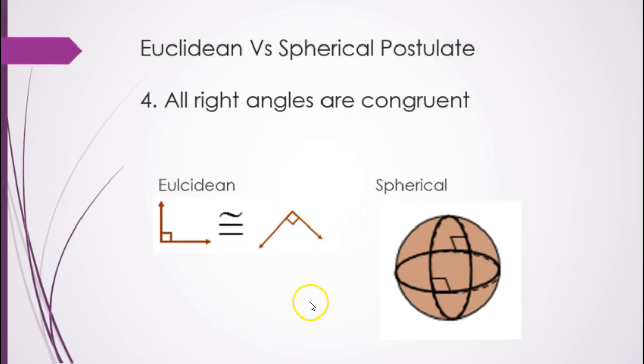All right angles are congruent. We're used to right angles looking like this, but we can see here, right here, this is a right angle. It's 90 degrees, and it's congruent to this one over here.